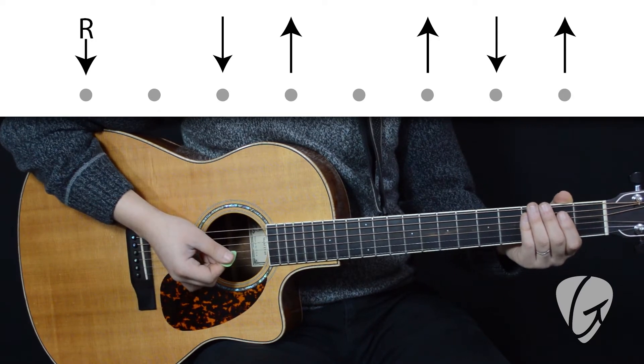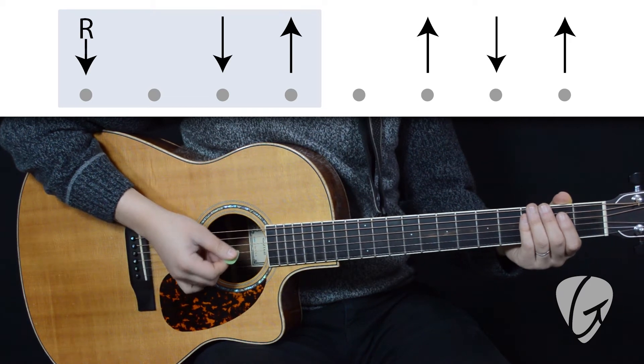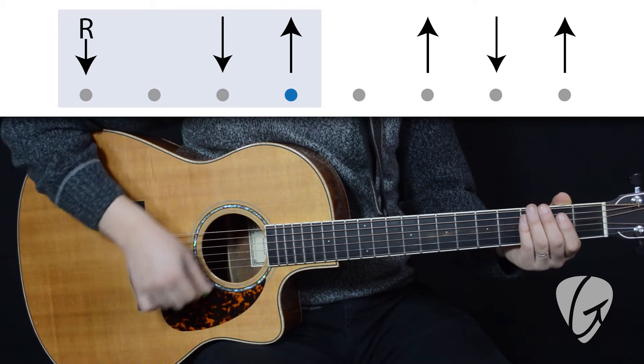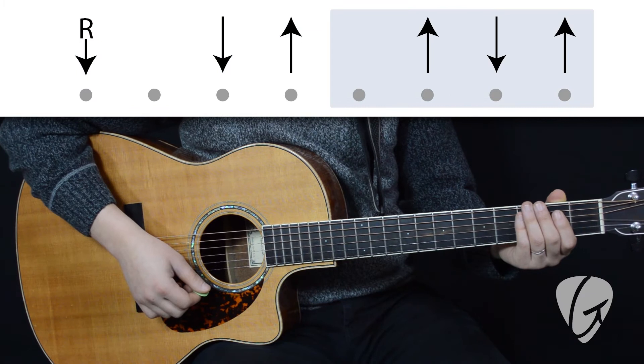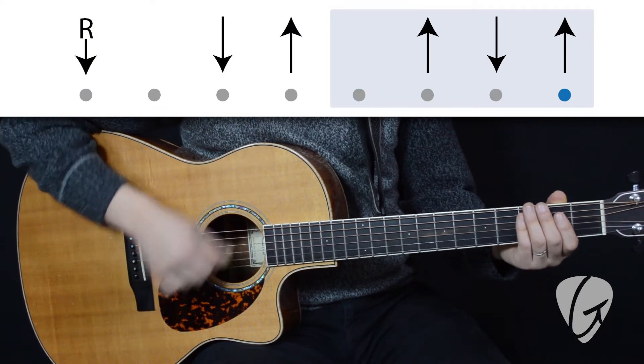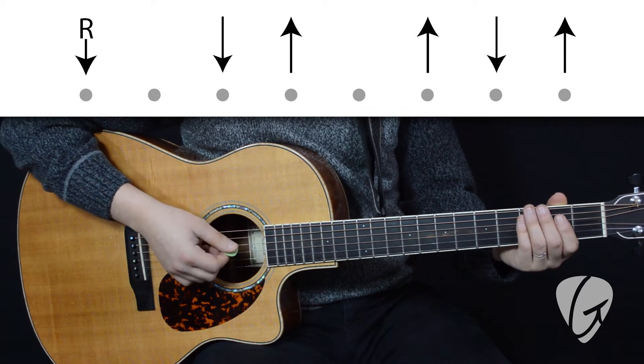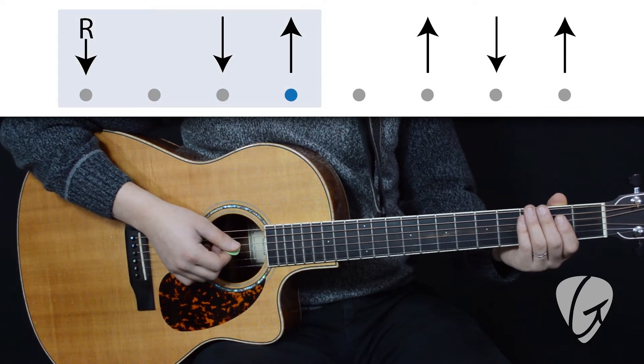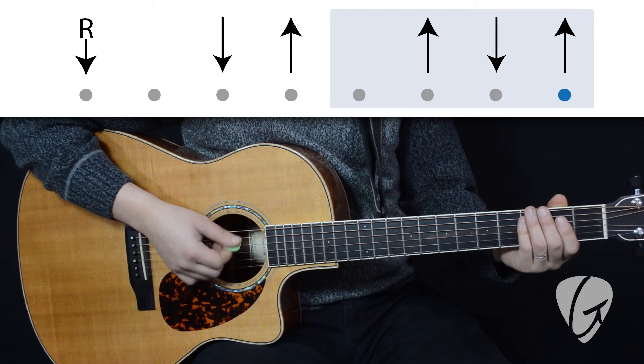So now let's break it down. We start with root, down, up. And then we play up, down, up. So when you put that together, you get root, down, up, up, down, up.